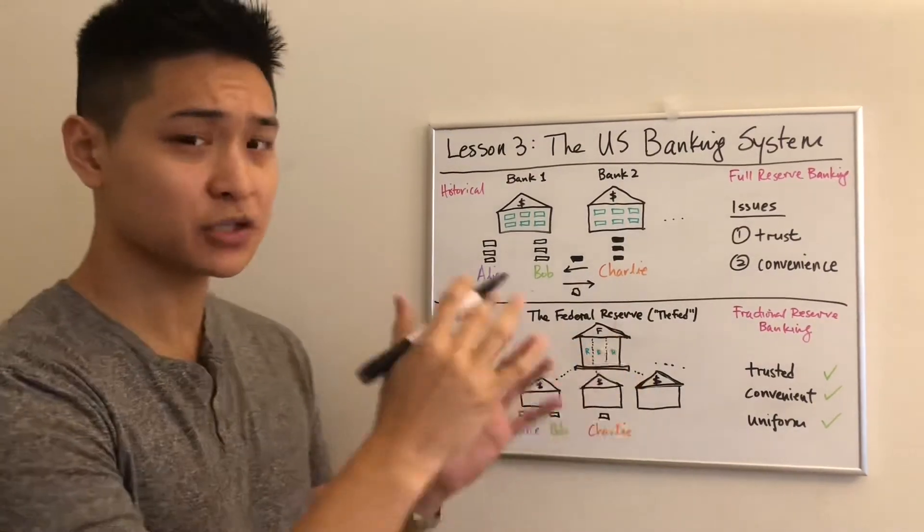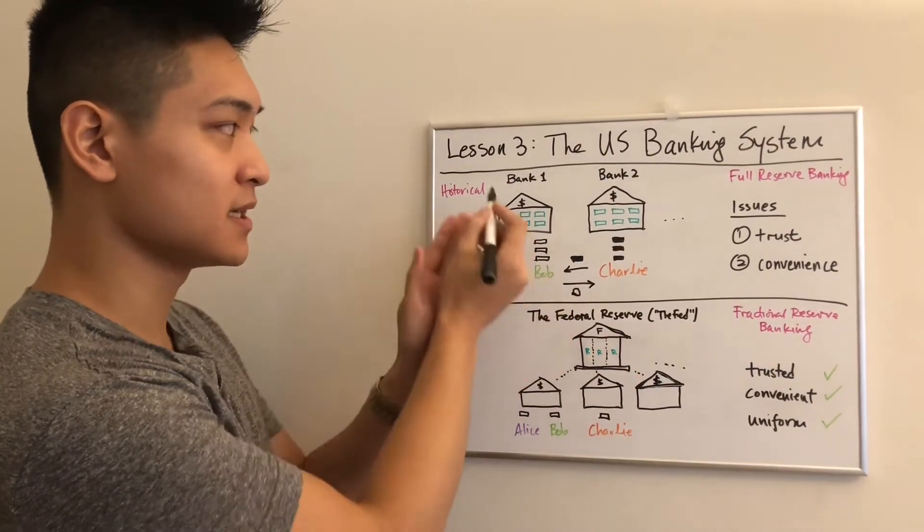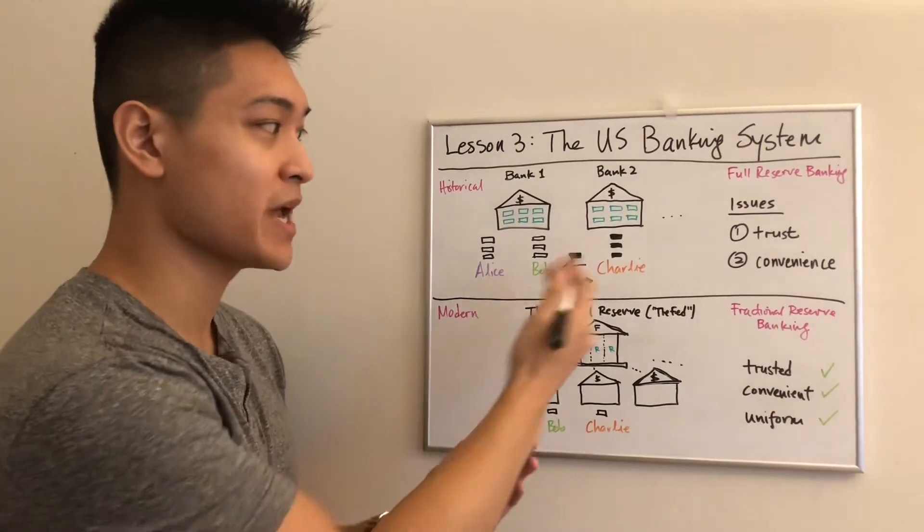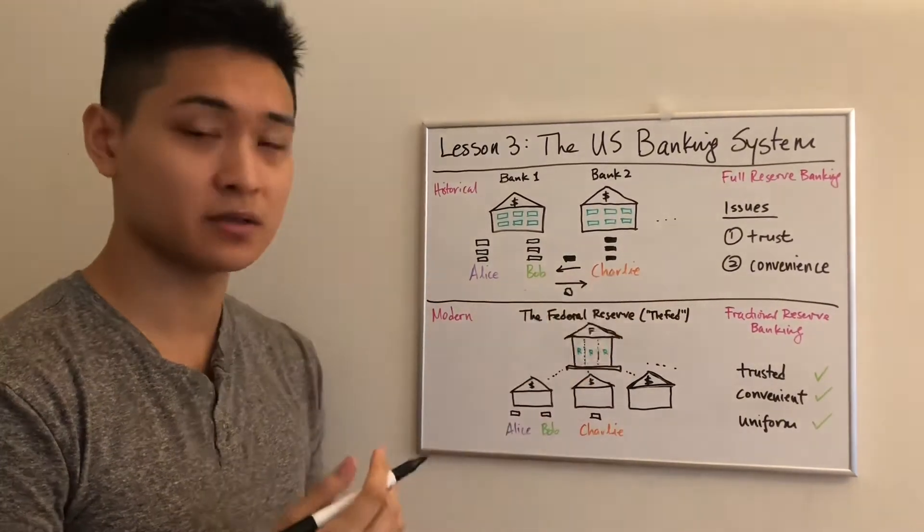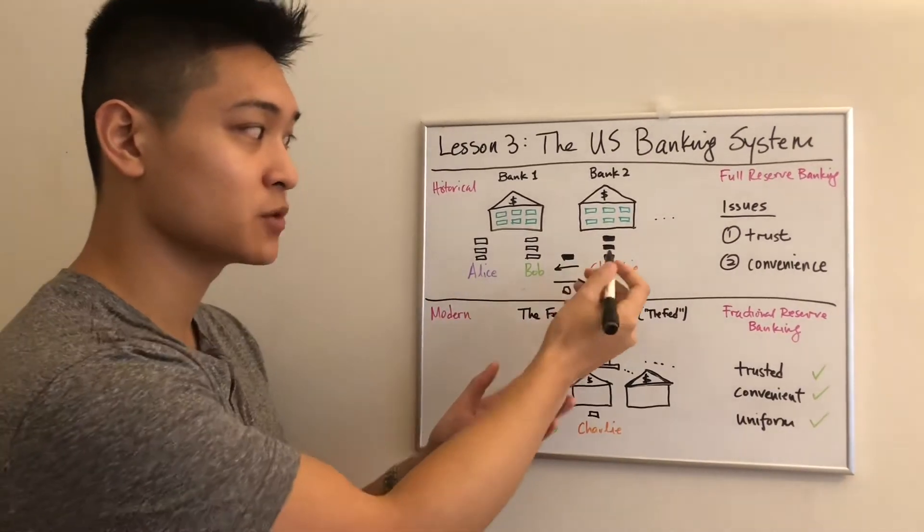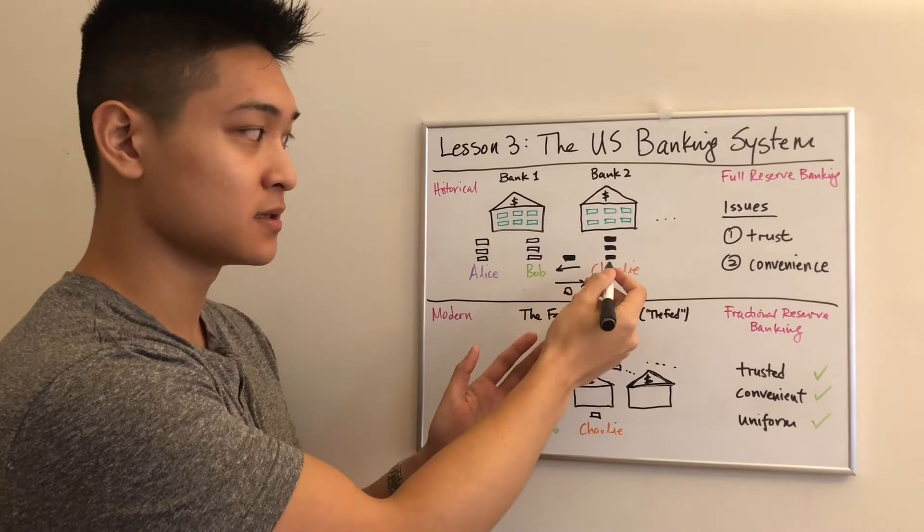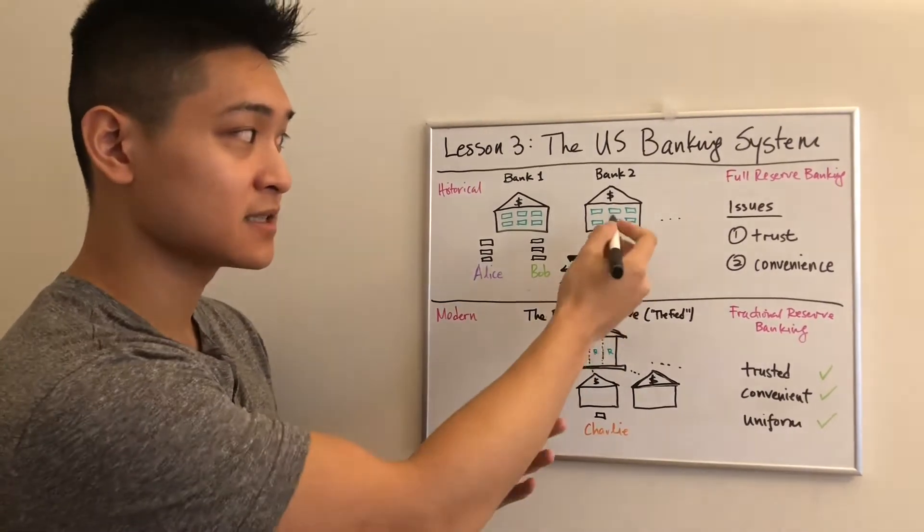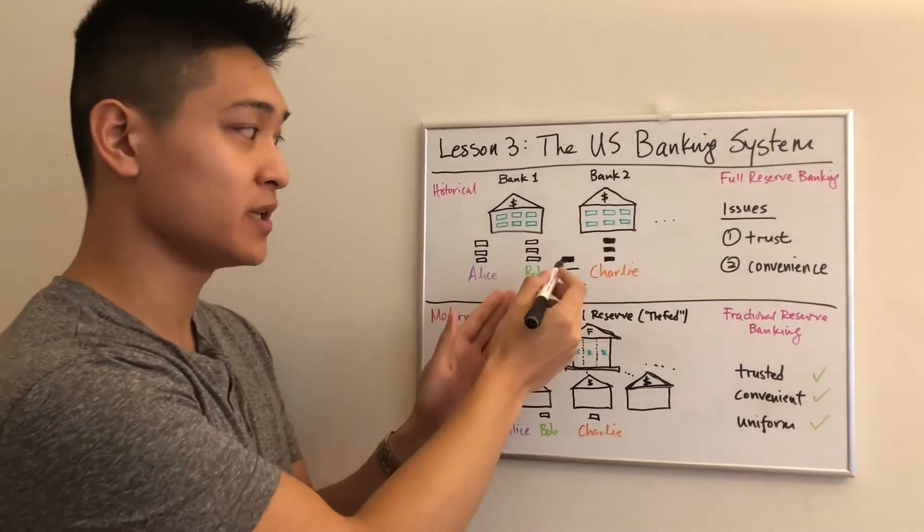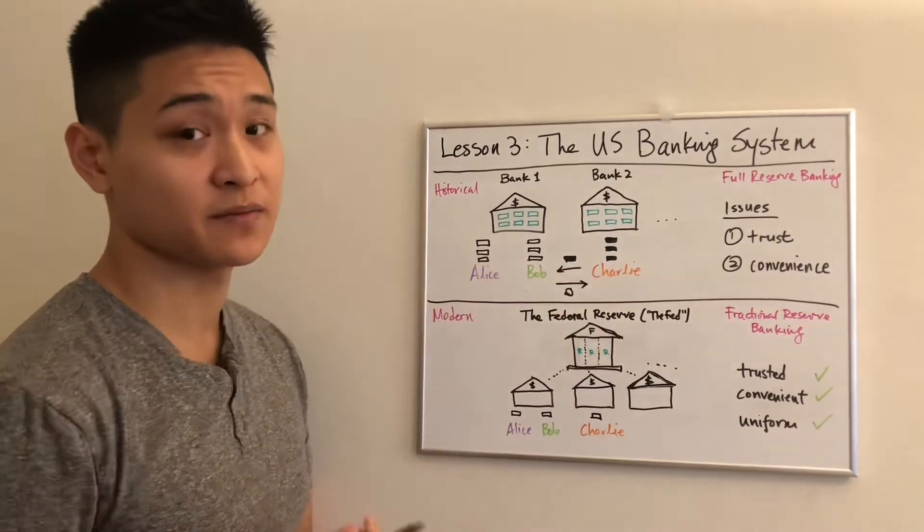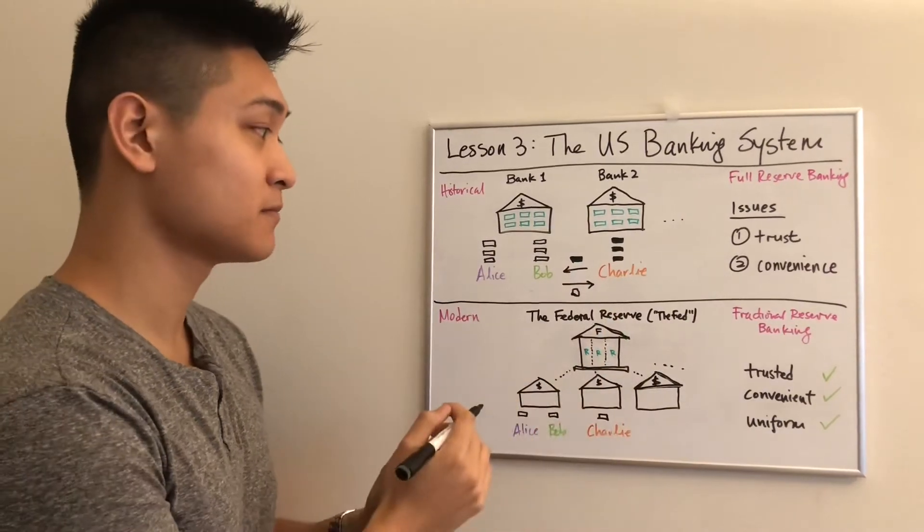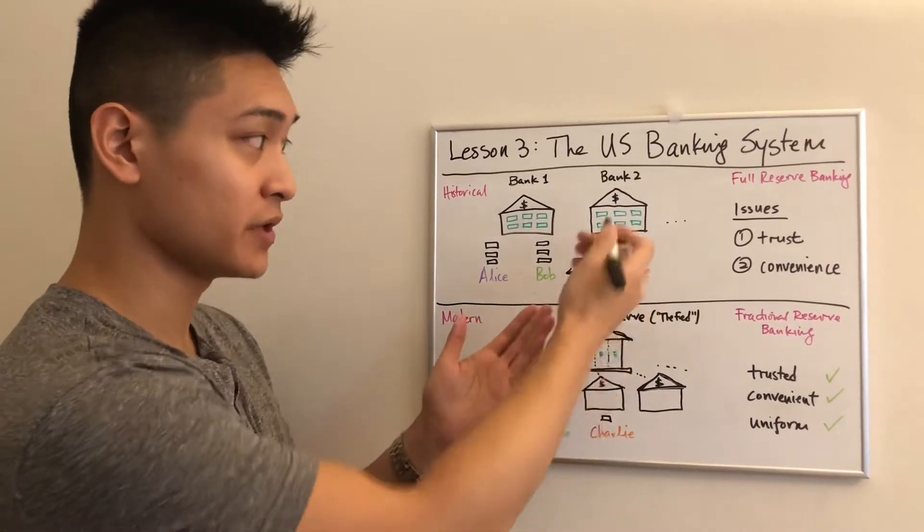But there are some issues here because Bob trusts his own bank where he deposits his gold, but he doesn't necessarily trust bank two where Charlie has deposited his gold. He doesn't know if these bank two owners are fraudsters. Perhaps they're issuing these IOUs, these bank notes, in excess of what gold has been deposited. So he doesn't really trust bank two, and maybe he's not willing to accept these bank two certificates, which would mean that's a problem because money has to be widely accepted.